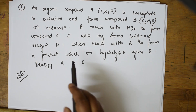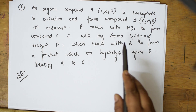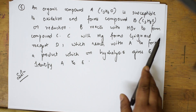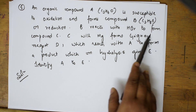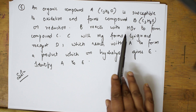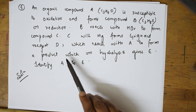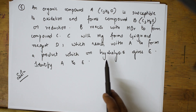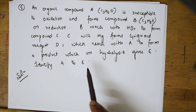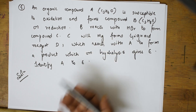In this question, they said an organic compound A — the formula is given as C₃H₆O — is susceptible to oxidation and forms compound B. B's formula is also given. Then they said B forms compound B on reduction. Then B reacts with HBr to form compound C. C with magnesium forms Grignard's reagent D, which reacts with A to form a product which on hydrolysis gives E. We need to identify A through E.